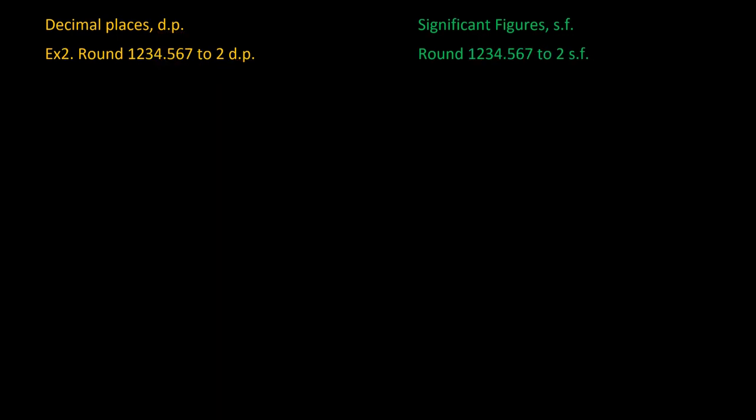There are one or two things that come up that you need to be aware of, so we're going to do several more examples to demonstrate all of these things so you really understand it. In this case, we're asked to round 1234.567 to two decimal places. So again, we put the line in — it goes in there.